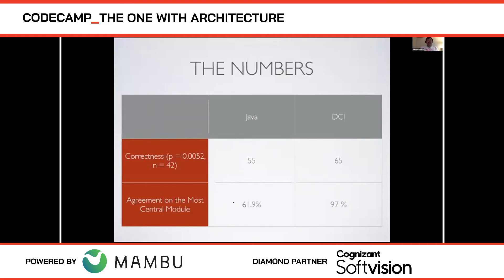In terms of correctness — answering questions about what the code does — people score 55 on Java code and 65 on DCI code. These are statistically significant, published results. If you look at agreement on the most central module, in Java no one really knows — in DCI it's clear. Everyone knows where the action is, and that's where they spend their time. That reduces context switching — the multitasking context switching that kills you in programming, going back and forth between windows and scopes.